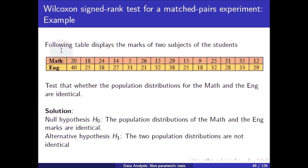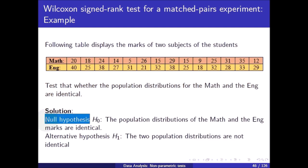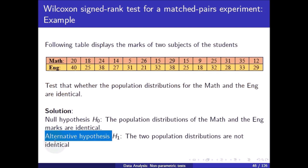Example 1: The following table displays the marks of two subjects for each student — mathematics and English. Test whether the population distributions for maths and English are identical. The null hypothesis is that the population distributions of math and English marks are identical, and the alternative hypothesis is that the two population distributions are not the same.